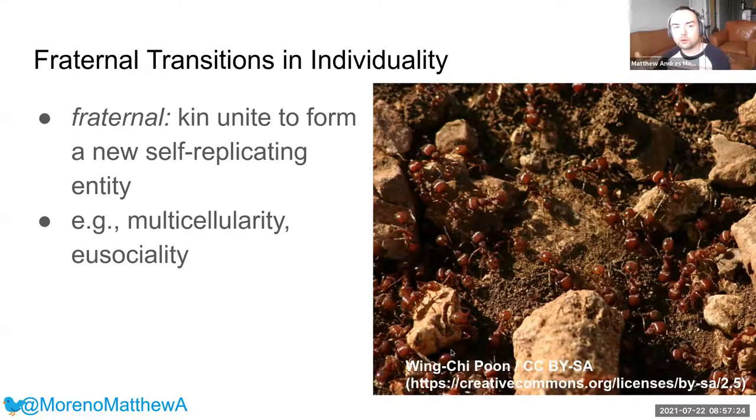This work will focus on a specific type of major transition, fraternal transition, evolutionary events where kin unite to form a new self-replicating entity. Characteristic examples from biological history include the evolution of multicellularity, where kin cells come together to form a self-replicating multi-cell, and the evolution of eusociality, often among insects where cooperating kin come together to form a self-replicating colony.